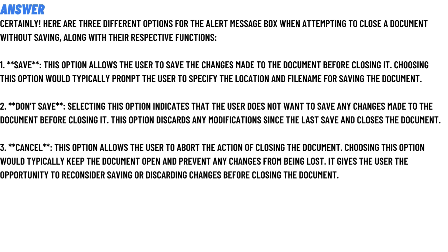The correct answer is: here are the three different options for the alert message box when attempting to close a document without saving, along with their respective functions. Option 1: Save. This option allows the user to save the changes made to the document before closing it.